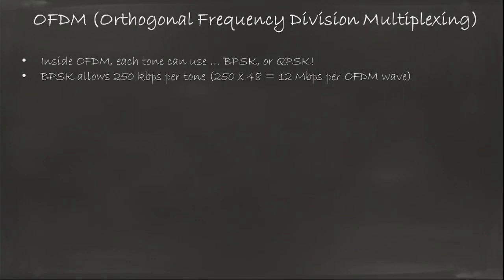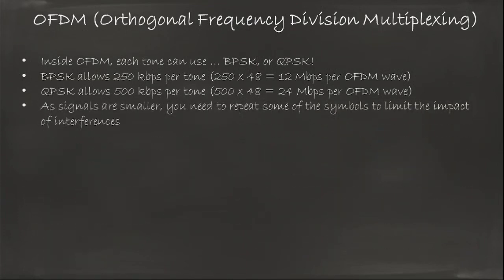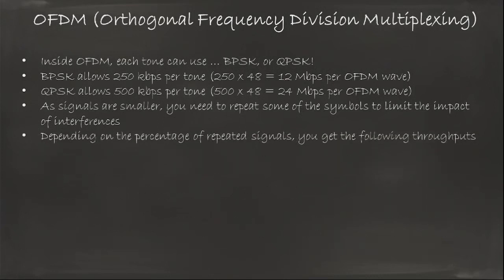If you use BPSK, you're going to transmit each small wave with a speed of 250 kilobits per second. Times 48, that means your wave can carry up to 12 megabits per second. Because we don't use Barker anymore, we just send the ones and the zeros directly with BPSK and QPSK, there is a risk that you may be missing some of the signal. So we typically allow to repeat some of the signal. Although with BPSK you can get up to 12 meg, and with QPSK you can get up to 24, you'll get a little bit less because we're going to repeat some of the signals just to be on the safe side.